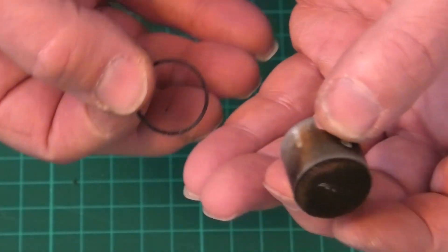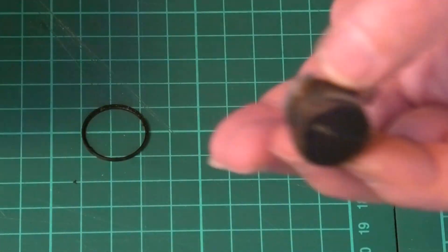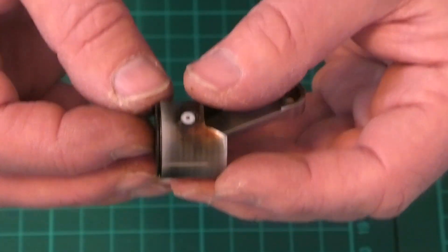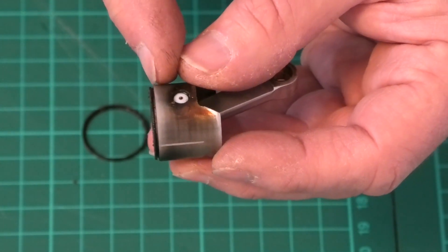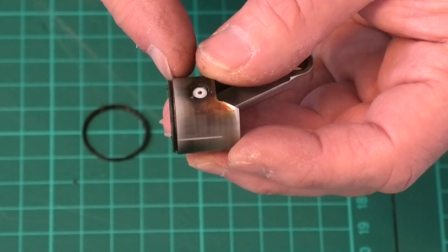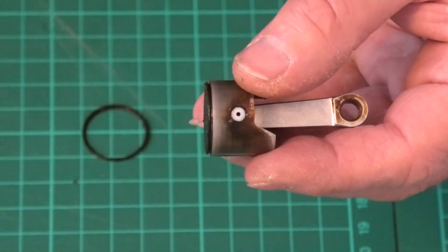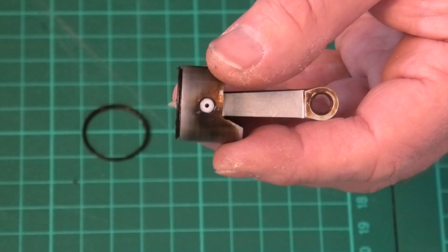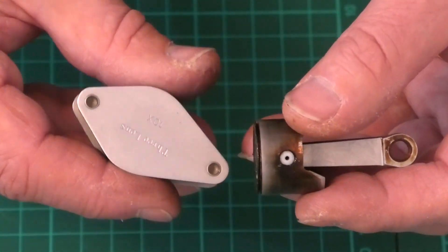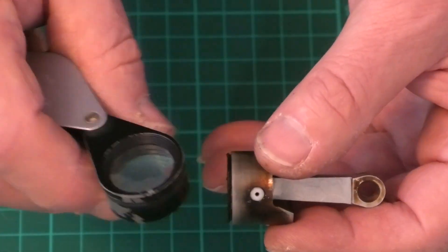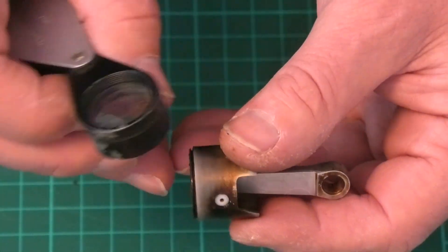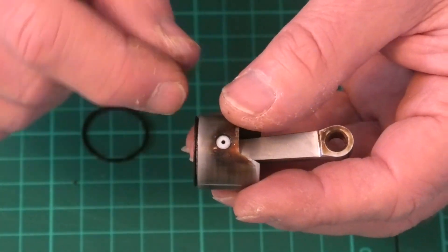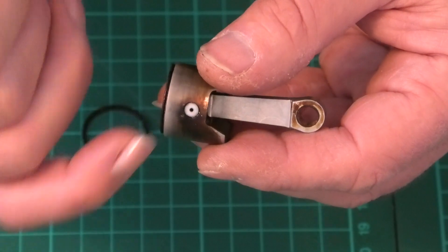As I said these are cast iron so they're quite brittle. We've got the groove that takes the ring which again we need to make sure is really clean so that the piston ring will float nice and free. I actually use a 10x hand lens to look in the groove on the piston just to make sure it's nice and clean.